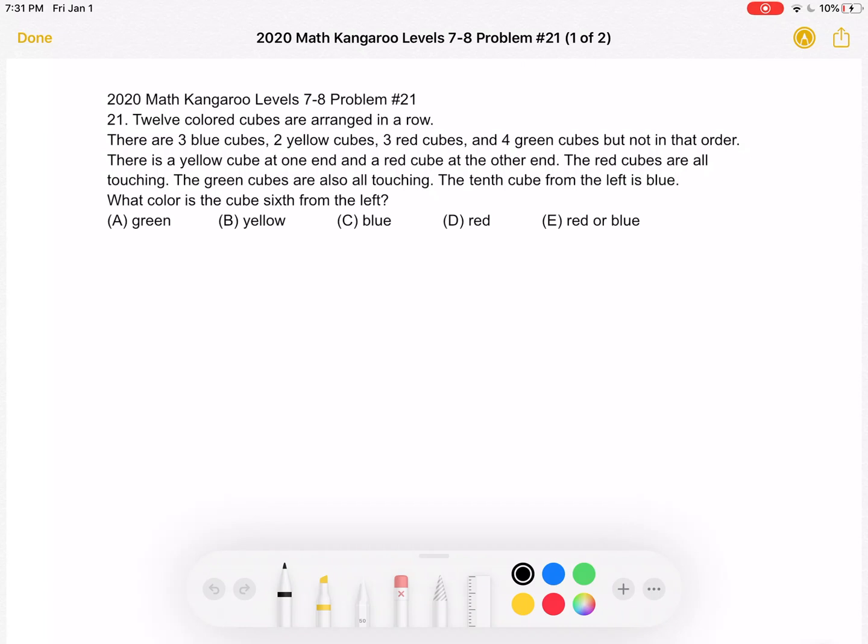Twelve colored cubes are arranged in a row. There are three blue cubes, two yellow cubes, three red cubes, and four green cubes, but not in that order. There is a yellow cube at one end and a red cube at the other end. The red cubes are all touching. The green cubes are also all touching. The tenth cube from the left is blue.